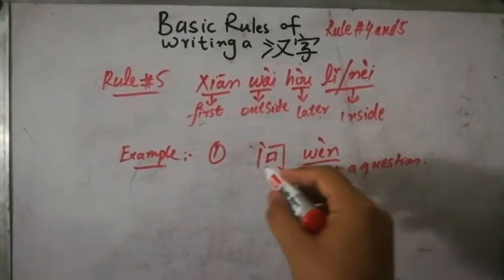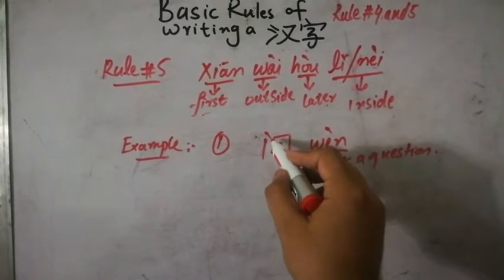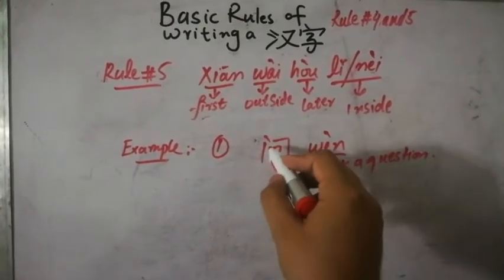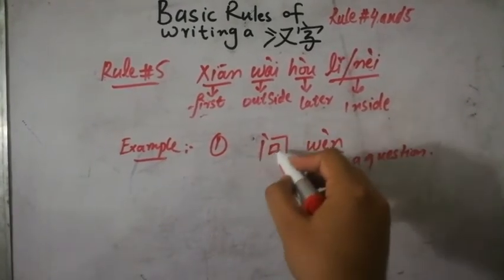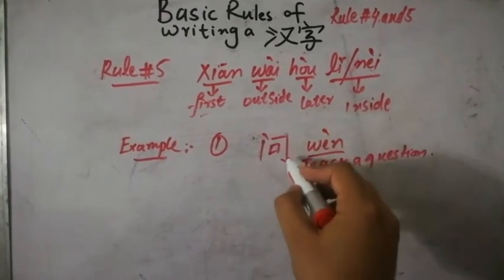So wèn, wèn, wèn. You see, first we wrote the dot. It is also following another rule. I will tell you about that. But for now, this portion is outside and this portion is inside. So we just completed this portion first, like we wrote the diǎn first, then we wrote the shù, and then we wrote this héng zhé gōu.